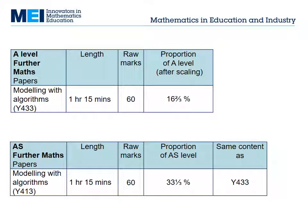This is how the exams work: there's one A level paper and one AS paper on the same content. They can be co-taught in Year 12.